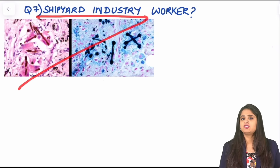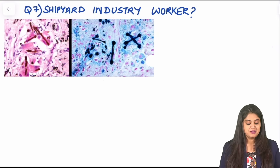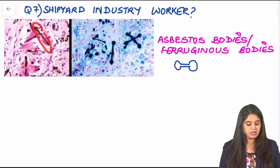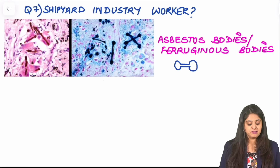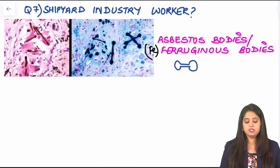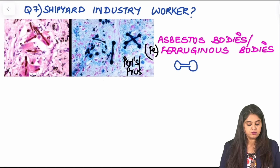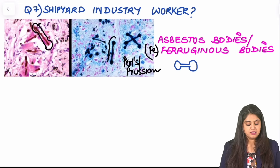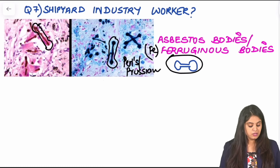Question seven: shipyard industry — even without an image I know this is asbestosis. In this image I can see a brown-colored asbestos body appearing blue, because the asbestos body is covered with iron — that's why it's called a ferruginous body. The stain used for iron is Perls' Prussian blue stain. What's characteristic is the shape: this is the classical dumbbell shape.